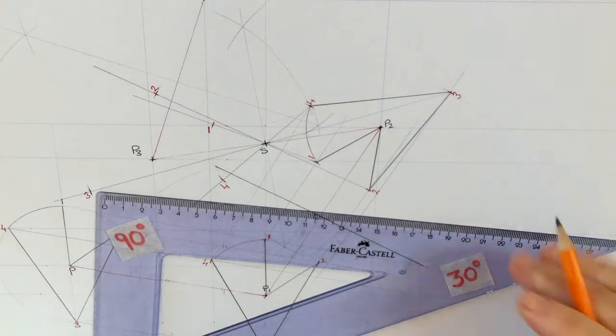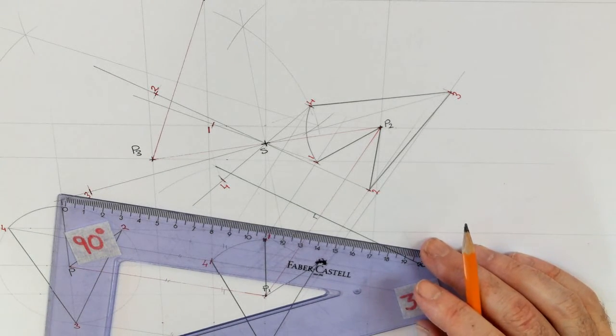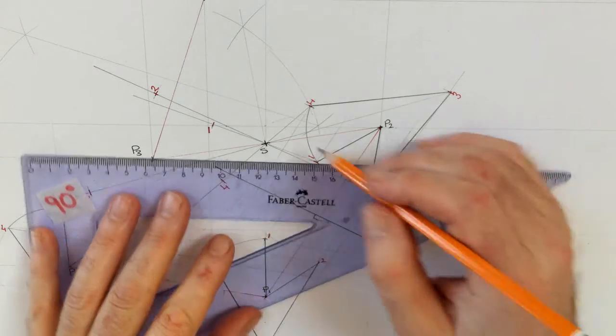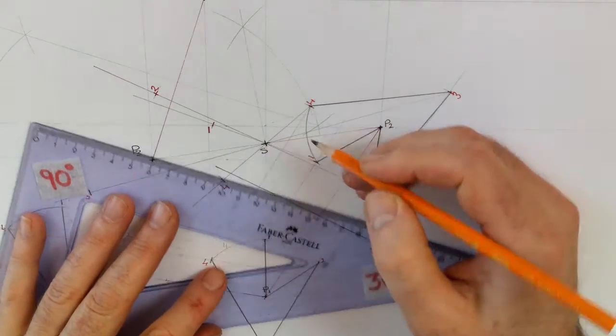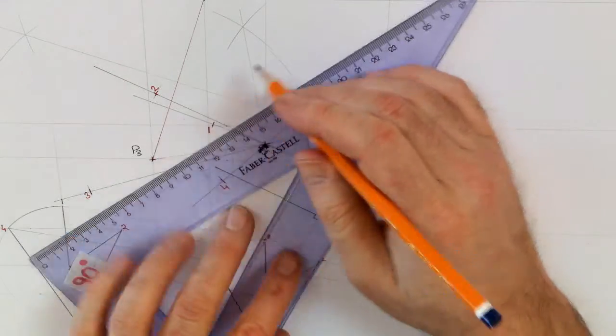Okay, join them in the same way. So 1 joins to P.